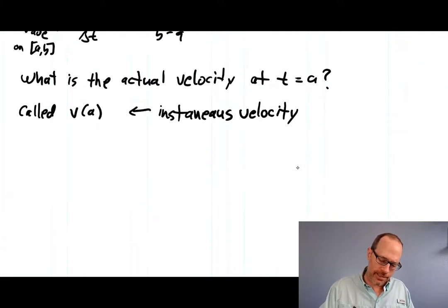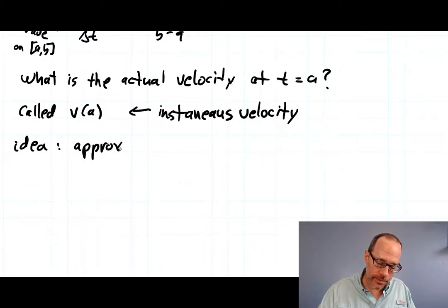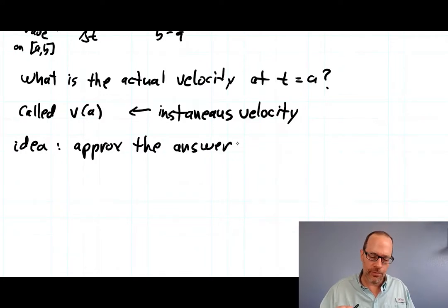And our idea is this: we don't know how to get the answer exactly just yet, but we can approximate the answer. So what you do is you figure, well, if I do a very small time interval around time equals a, that would be a good approximation. If it's a really tiny interval, it'll be close to my instantaneous velocity.